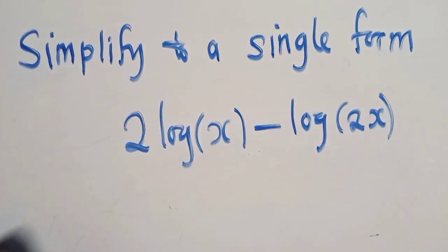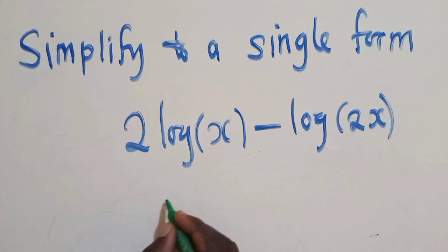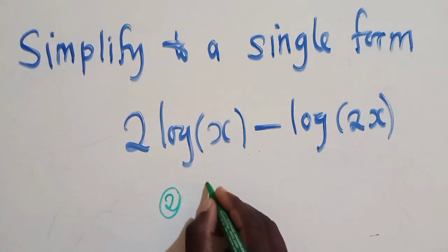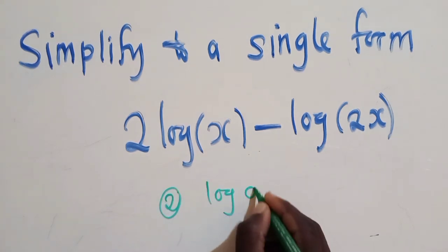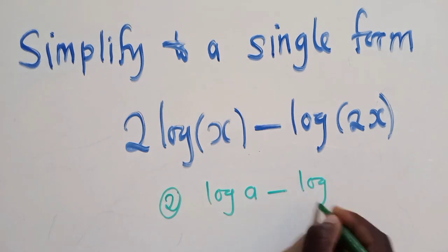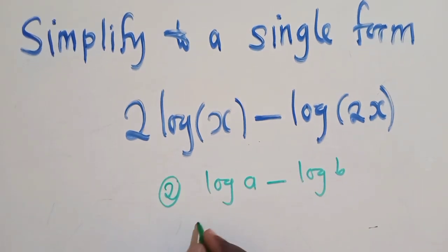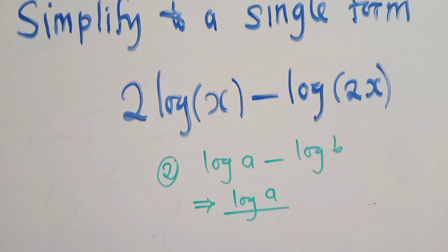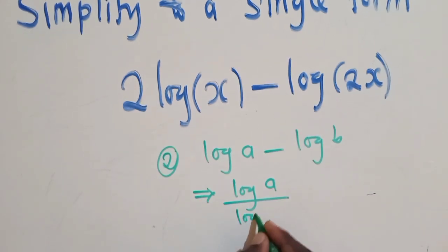Property number 2: when you've got log of A minus log of B, this will simply give us log of A divided by B.